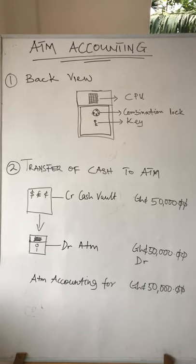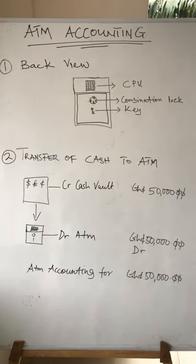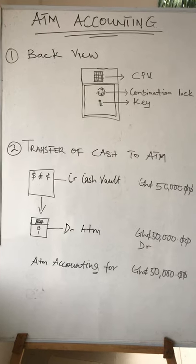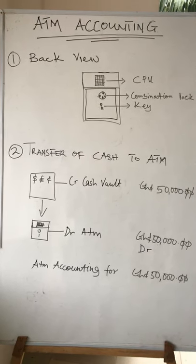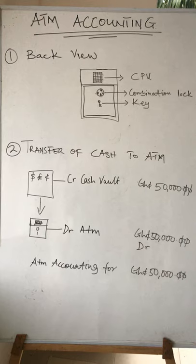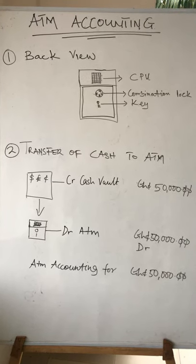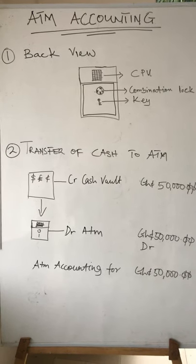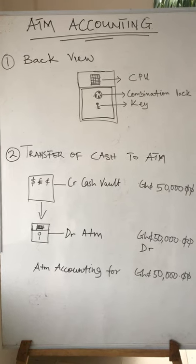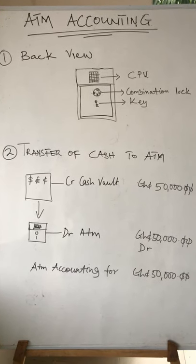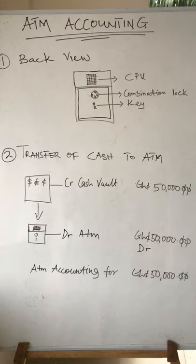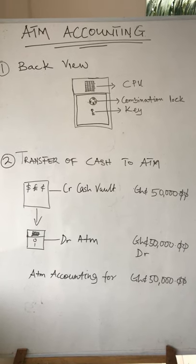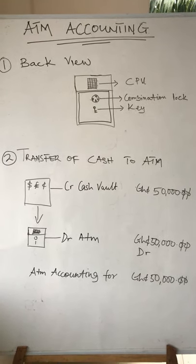ATM accounting simply means accounting for the money transferred from the cash vault to the ATM. From this diagram, accounting for the 50,000 Ghana cedis, 50,000 US dollars, or 50,000 pounds transferred from the cash vault into the ATM.